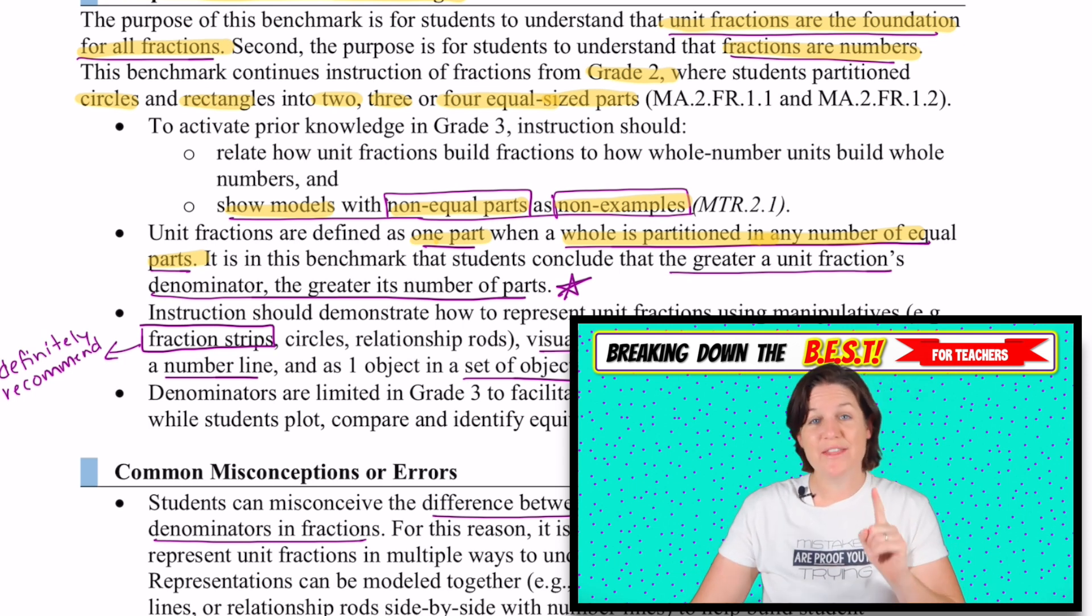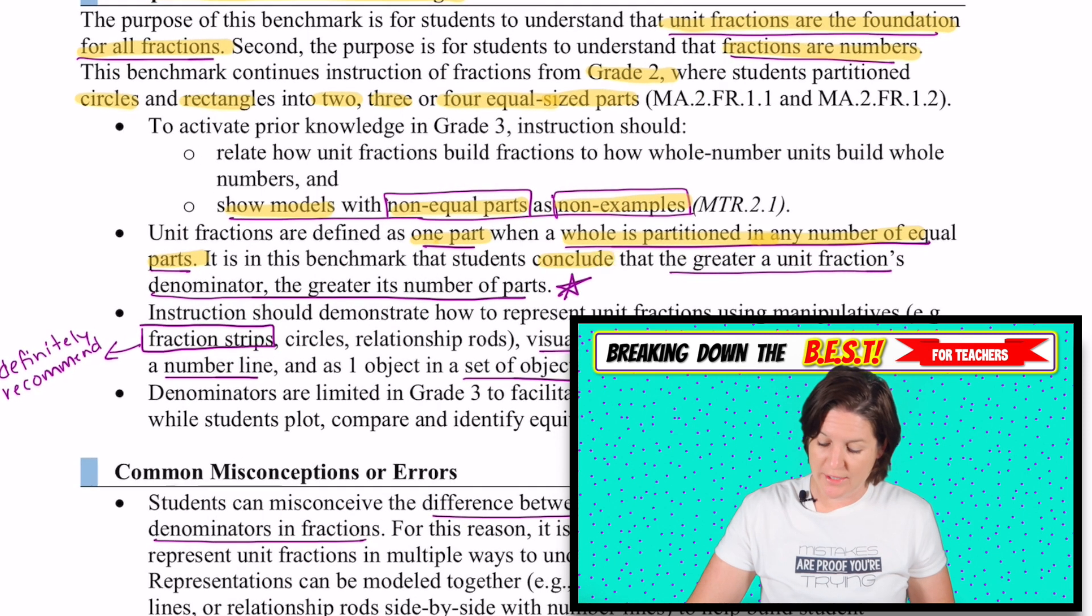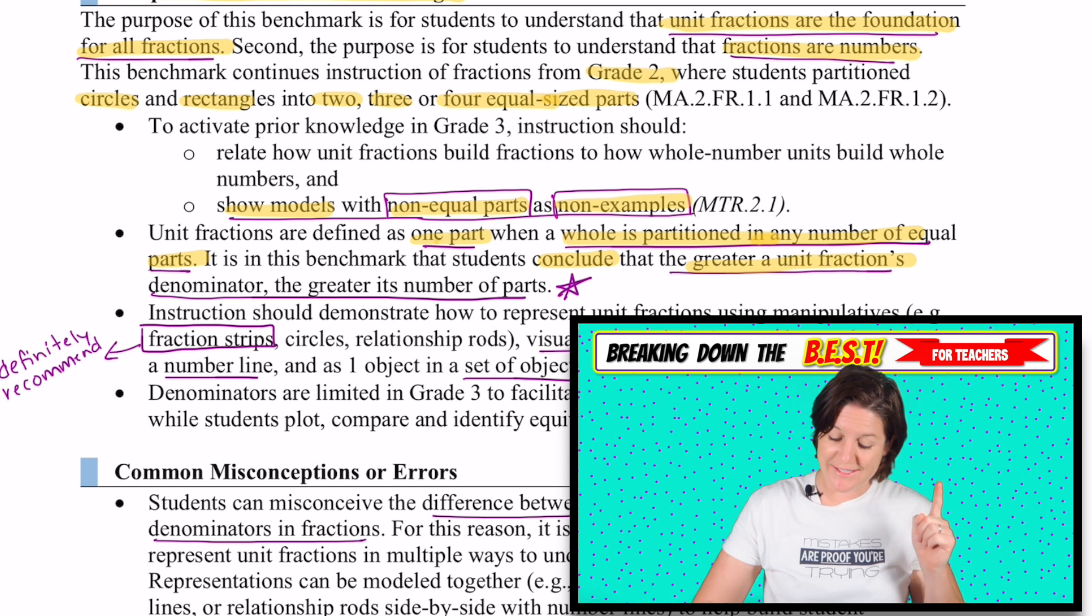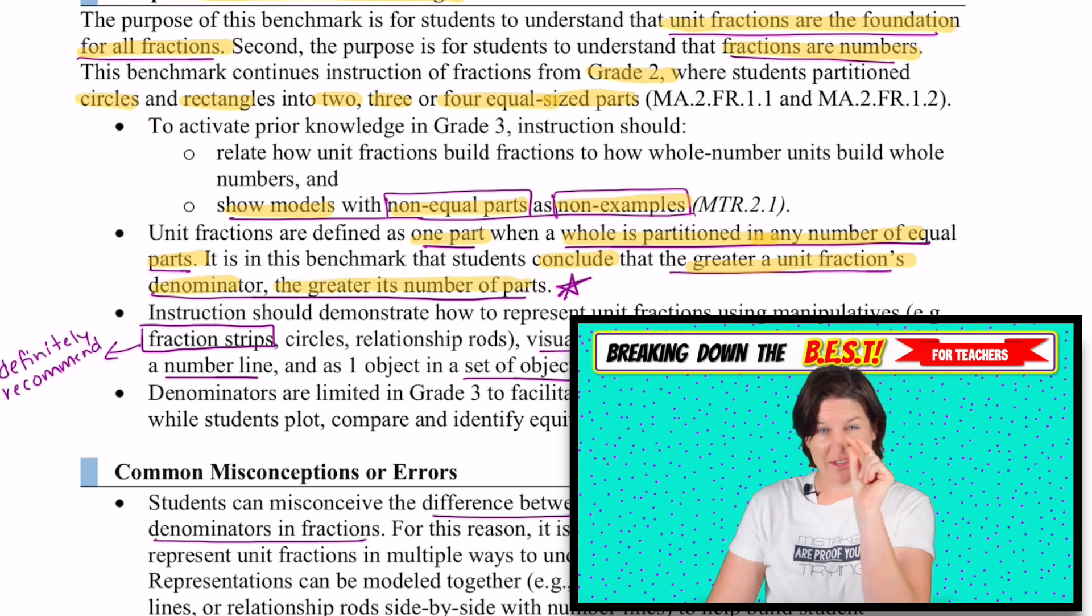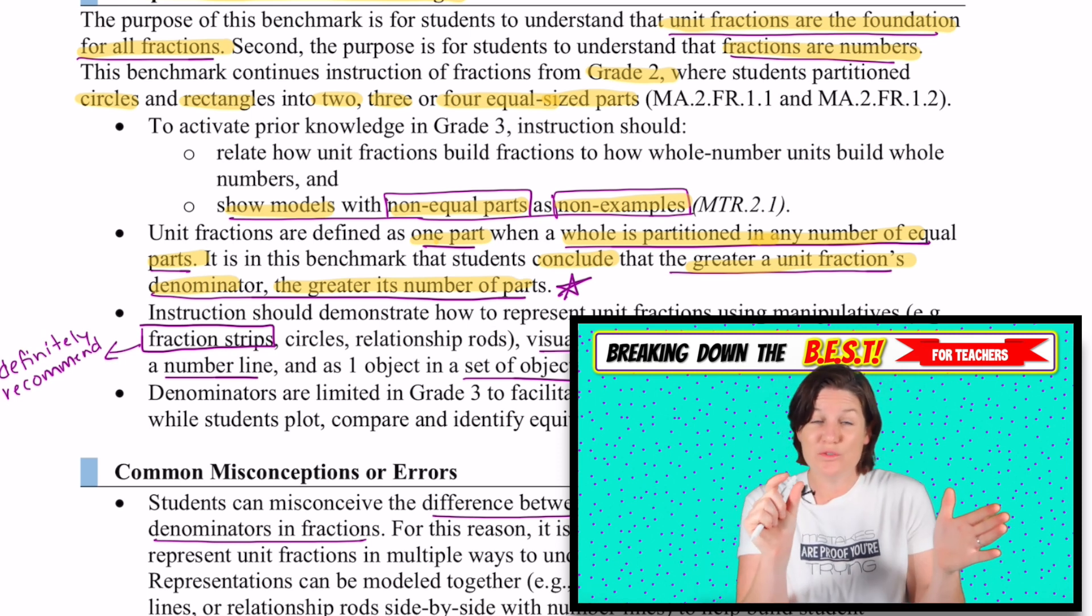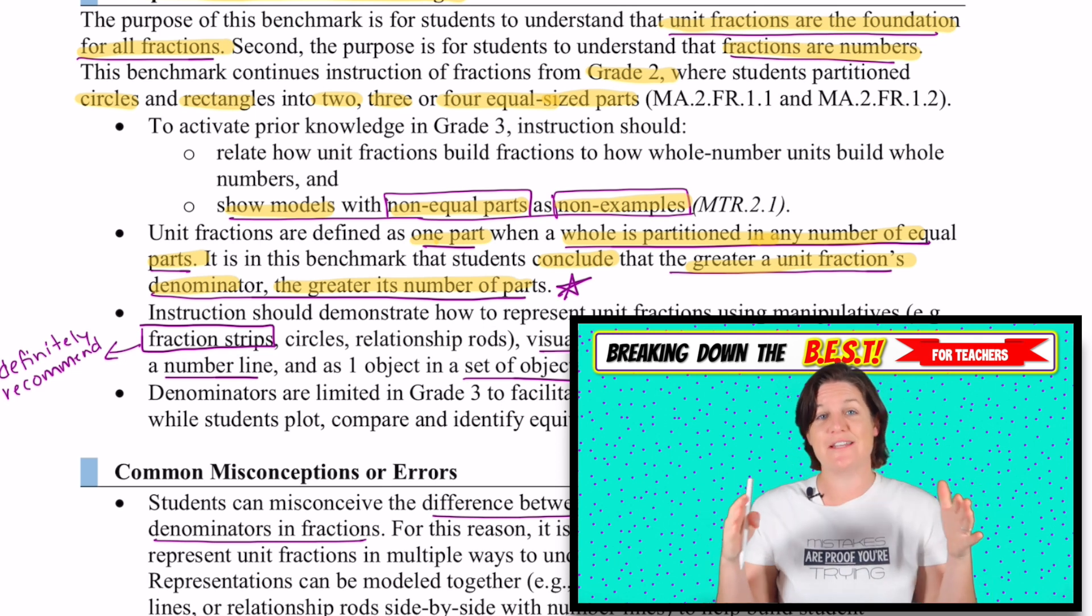And we want them to conclude here. We want them to come to this conclusion that the greater a unit fraction's denominator, the greater the number of parts, also that they'll be tinier. For instance, halves are much larger pieces. One half is a much larger piece than one twelfth. One twelfth is one out of 12 tiny little pieces fitting inside that same whole. So we do want students to come to that conclusion. Visual models and manipulatives are a great way to make that happen.